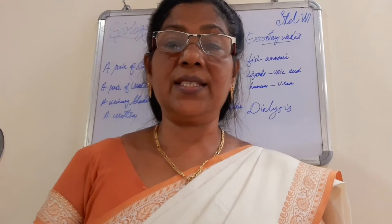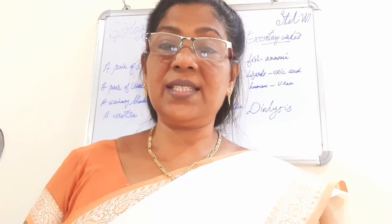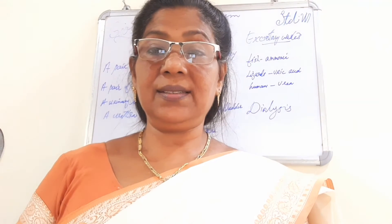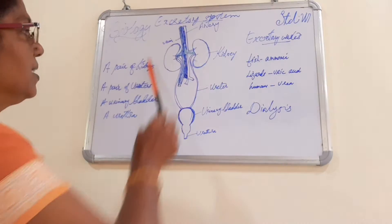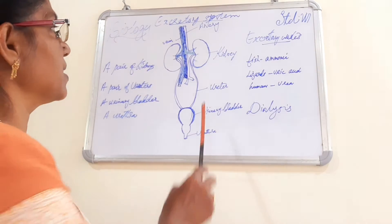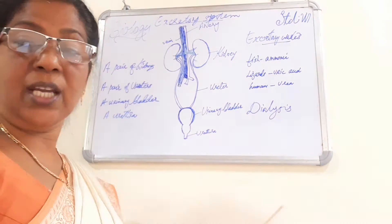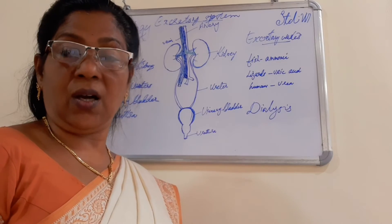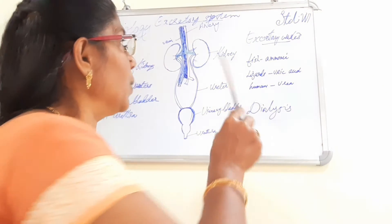The excretory system in humans consists of a pair of kidneys, a pair of ureters, a urinary bladder, and a urethra. This is the picture of the excretory system in humans. There are a pair of kidney-shaped organs located on either side of the vertebral column, reddish brown in color, which are known as kidneys.